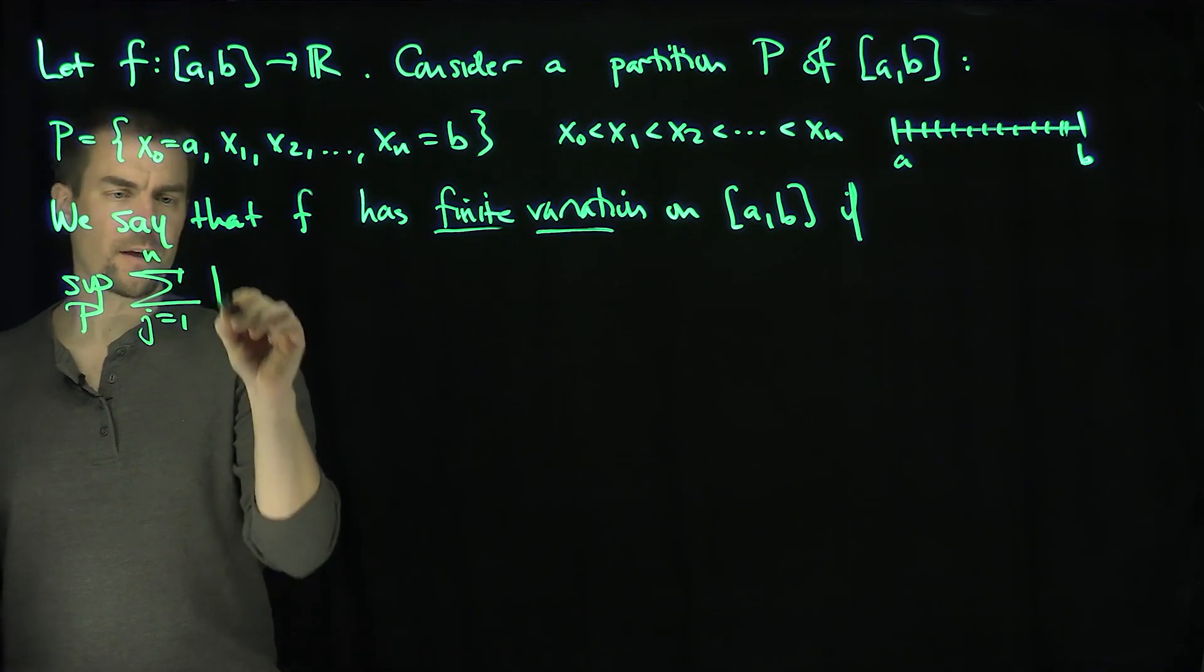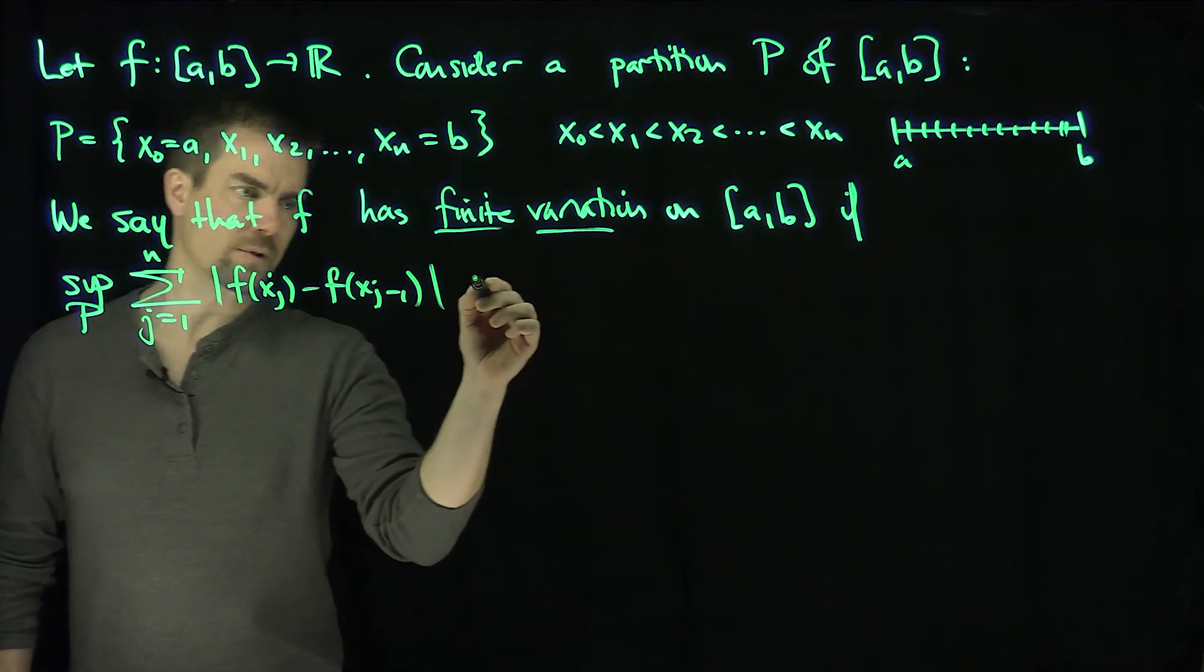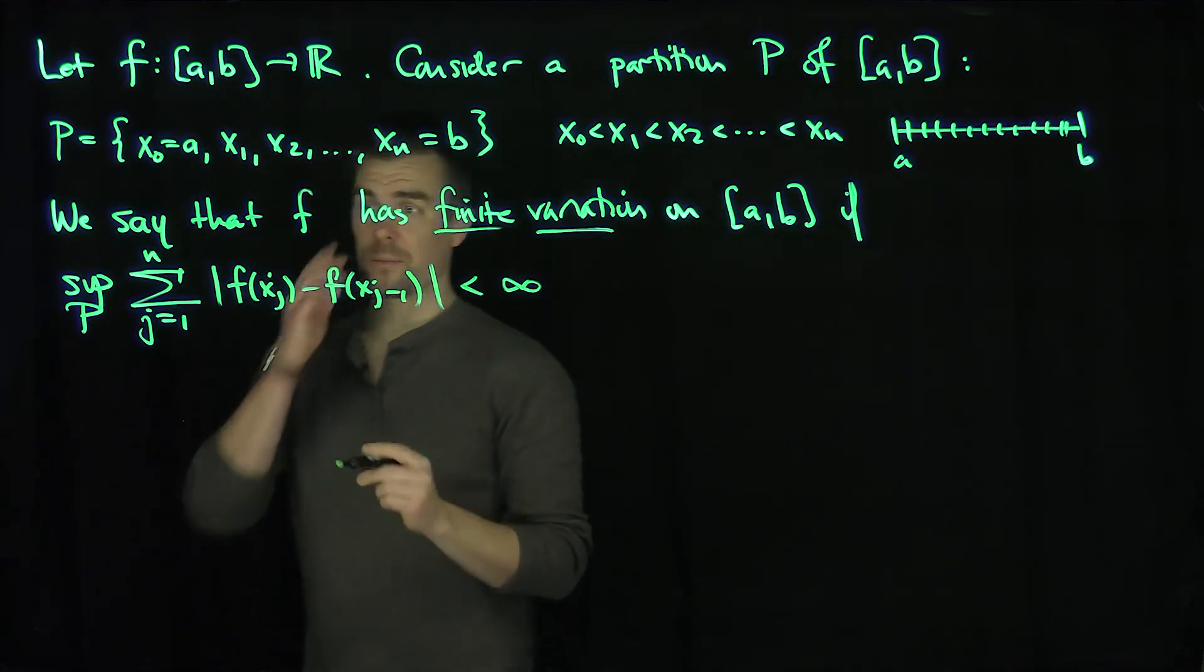If the supremum over all partitions of this quantity, the sum from j=1 to n of |f(xj) - f(xj-1)|, is less than infinity.